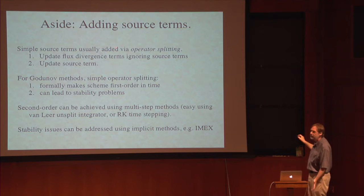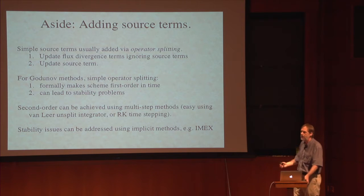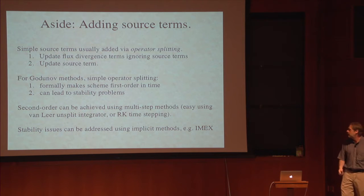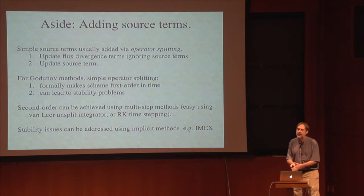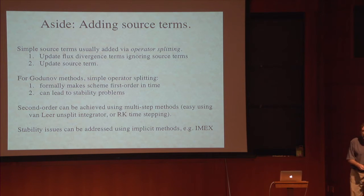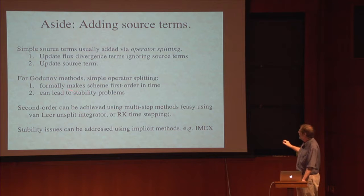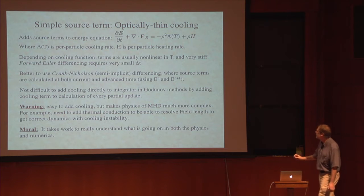Adding these source terms into the equations is really very, very straightforward. If you're using operator splitting, which is a common technique, there are basically two ways to go: either embed the source terms directly into the multi-step time integration procedure — for example, using Runge-Kutta methods, including the source term directly in every sub-step — or you could just split it off completely. The latter is only first-order accurate in time, but is quite a lot easier to implement.